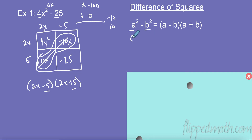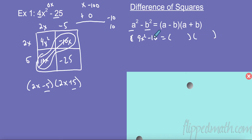For example, if I had 9x² minus 16, I don't need to multiply first times last — I'm going to go right to the answer. The square root of 9x² is 3x, that goes in the front. The square root of 16 is 4, that goes in the back. One factor is minus and one is plus. Just that easy.